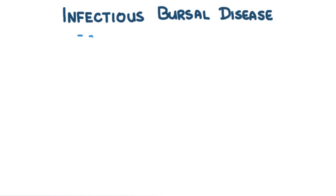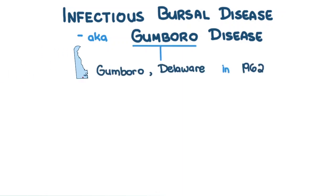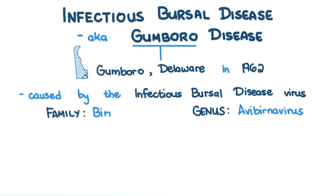Infectious Bursal disease is also known as Gumboro disease because it was first recognized in Gumboro, Delaware in 1962. It is caused by the Infectious Bursal disease virus, the sole member of the genus Avibernavirus. It belongs in the family Birnaviridae.